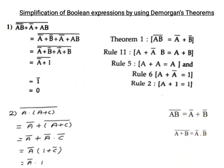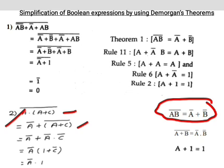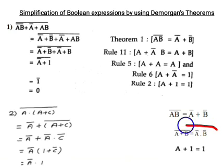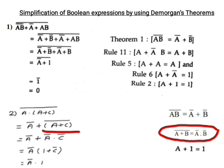Second example: A into (A plus C) whole complement. That equals A complement plus (A plus C) whole complement, because A into B complement equals A complement plus B complement. So we get A complement plus (A plus C) whole complement, and by De Morgan's theorem, A plus C whole complement equals A complement into C complement.